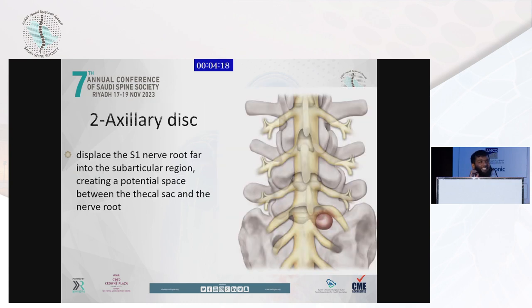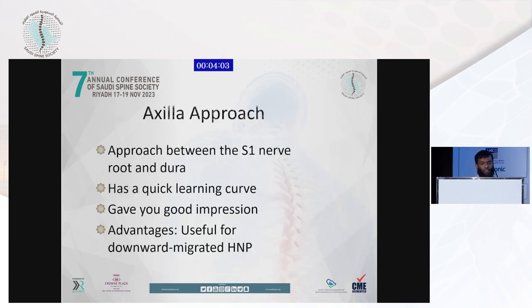The axillary disc is actually our fun part in endoscopy — it is the easiest one. Why? Because the S1 nerve root, as we discussed in the anatomy, displaces the S1 nerve root far into the subarticular region, creating a potential space between the thecal sac and the nerve root. The approach is between the S1 nerve root and the dura — quick learning curve, good impression, and useful for downward migrated herniated nucleus pulposus.